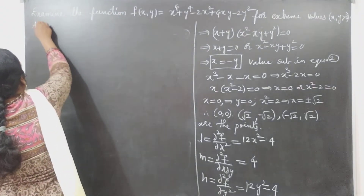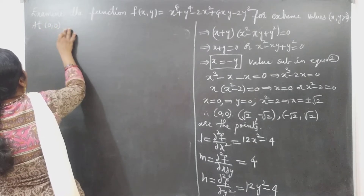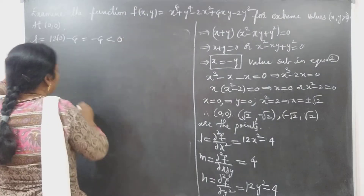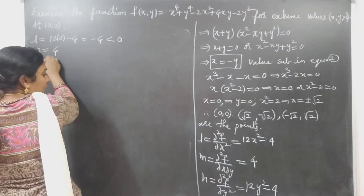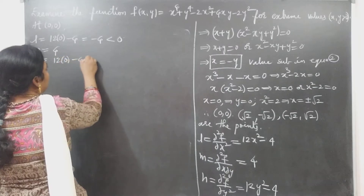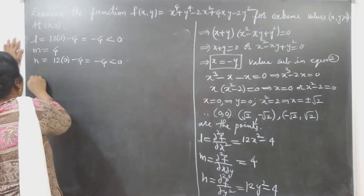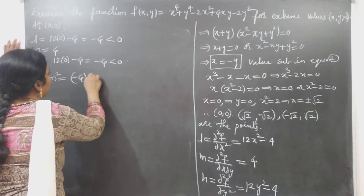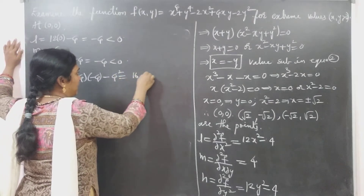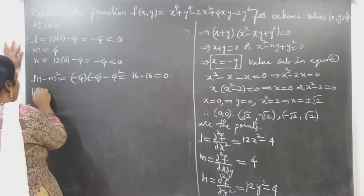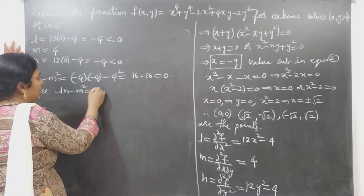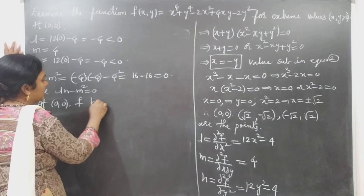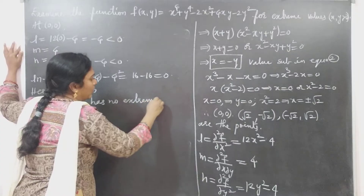Check at (0, 0): L = 12(0) - 4 = -4, which is less than 0. M = 4. N = 12(0) - 4 = -4, also less than 0. LN - M² = (-4)(-4) - (4)² = 16 - 16 = 0. Since LN - M² = 0, at the origin f has no extremes.